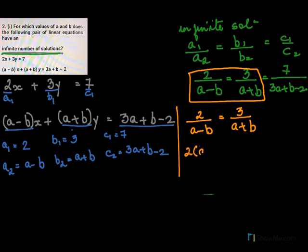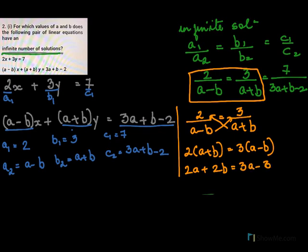So it will be 2 into A plus B equal to 3 times A minus B. Open the bracket. 2A plus 2B equal to 3A minus 3B. I will bring all the A terms together. This is one A term which I will get it here. So 2A minus 3A, this is minus 3B. When I go on the other side, it will become plus 3B equal to 0.